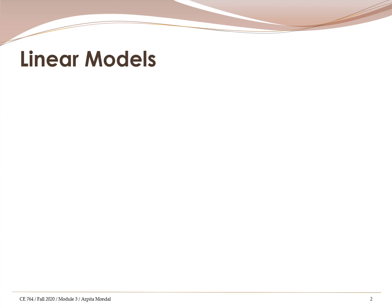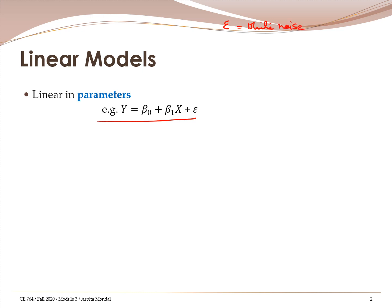In statistics, we say it's a linear model only if it is linear in terms of the parameters. This means that if we have a model of the form where y is given by beta-naught plus beta-1 times x plus some noise epsilon, where epsilon is white noise, then it is linear in terms of the parameters beta-naught and beta-1, and therefore this is an example of a linear model.